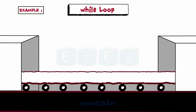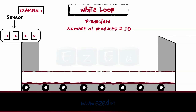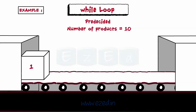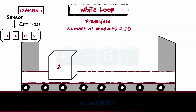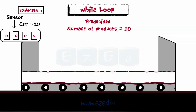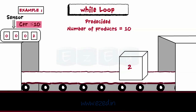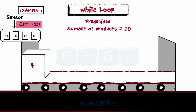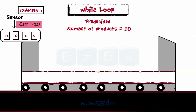Let's take the conveyor example to understand the while loop. Suppose it is pre-decided that the number of products to be packed is 10. The sensor keeps a track on the counter's value whether it has reached 10 or not. When the first product is placed on the conveyor, the counter is set to 1. The sensor tests the condition by checking if the counter value is less than 10. As counter value is 1, the product is allowed to move on the conveyor for packaging. The product is packed, then the counter is incremented to allow the next product. Again, the test condition is evaluated to check if counter is not equal to 10. This process continues till the counter reaches 10. The sensor won't allow the 11th product to move on the conveyor as the condition has become false.